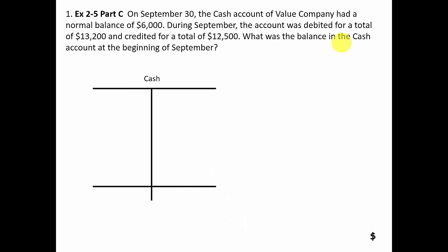The first question involves an analysis of cash. On September 30th, the cash account of Value Company had a normal balance of six thousand dollars. Normal balance means the way you increase the account. The way you increase cash is with a debit, so its normal balance is a debit. We start with the ending balance for September, which is six thousand dollars.